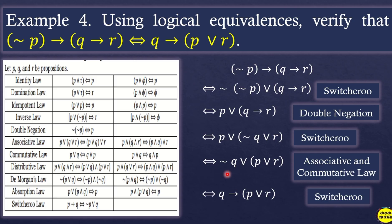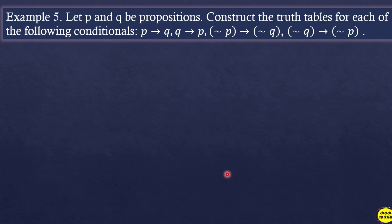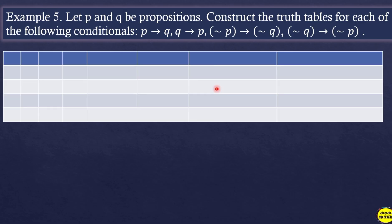Let p and q be propositions. Construct the truth table for each of the following: if p then q; if q then p; not p; if not p then not q; if not q then not p. We verify using the conditional statement truth table. First, get the negation of p — opposite of each value.